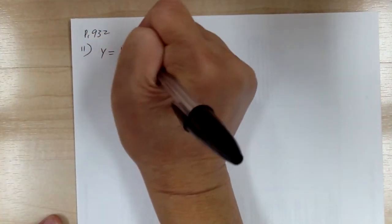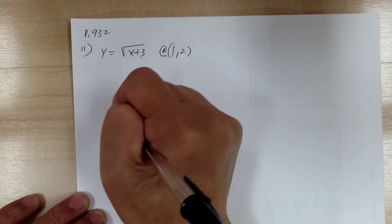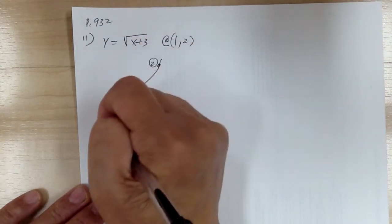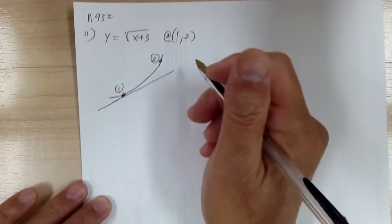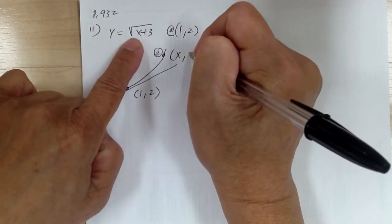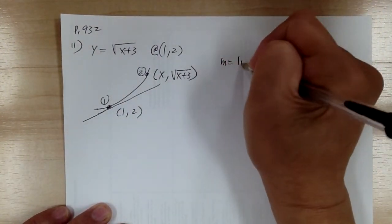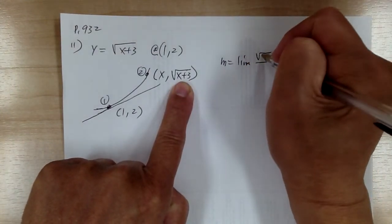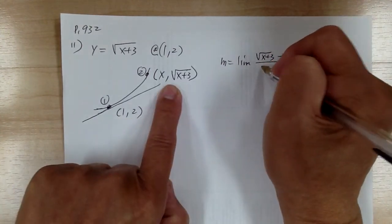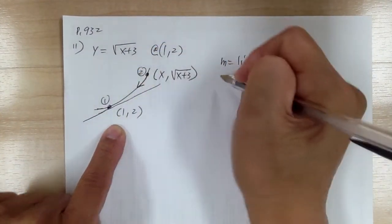Okay, let's go to number 11. You have y equal to square root of x plus 3 at 1 comma 2. Again, you're looking for a tangent line. Here's your point 1, point 2. This point is at 1 comma 2. This point would be x, and the y would be square root of x plus 3. First you have to find the slope — slope equals the limit of y2 minus y1 over x2 minus x1, and x approaches to 1.